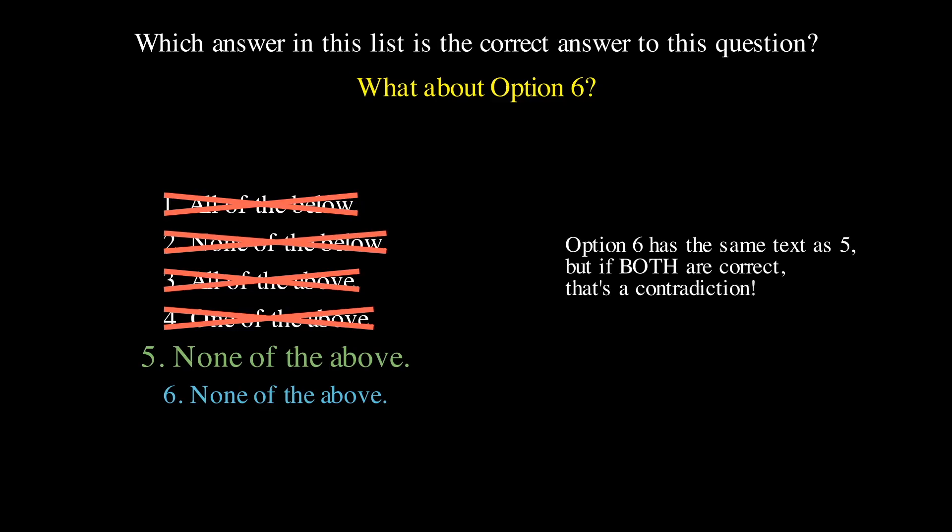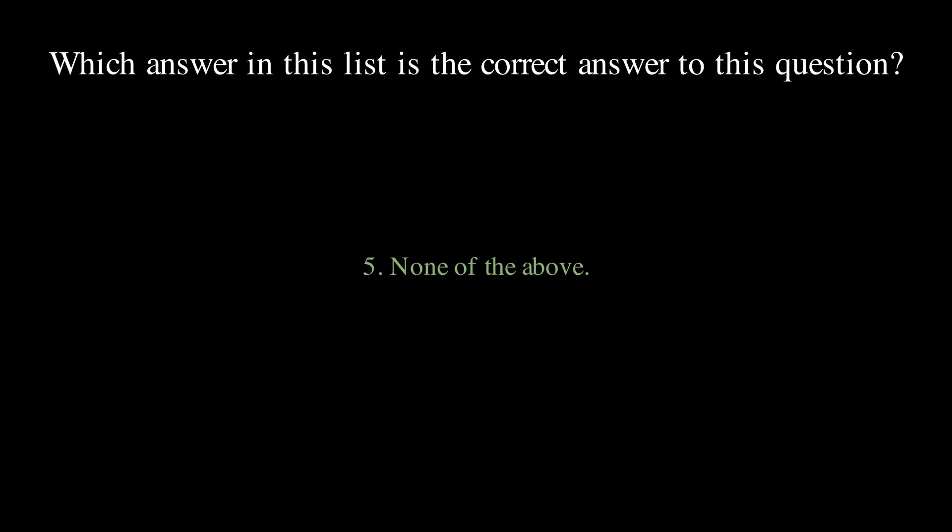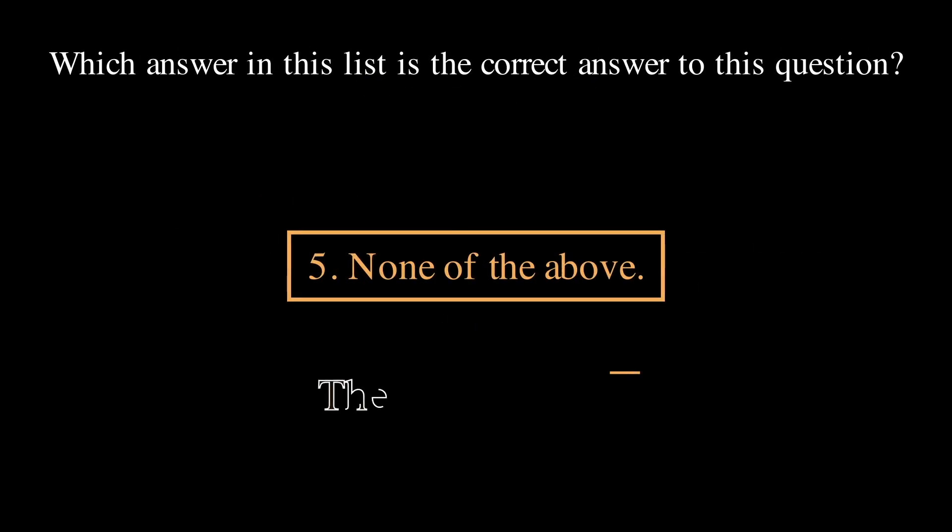So if option five is true, option six must be false. Therefore, option six cannot be the correct answer, and we're left with only one consistent winner, option five.